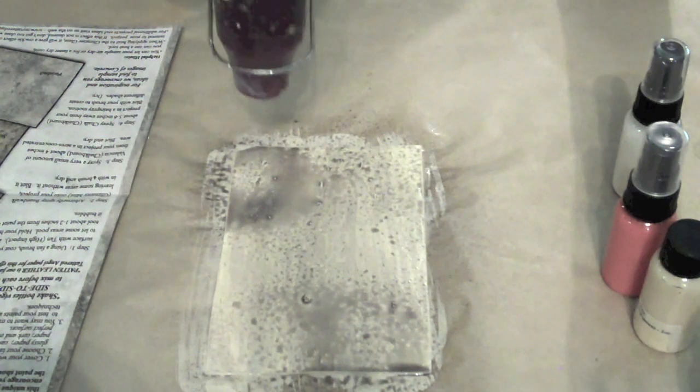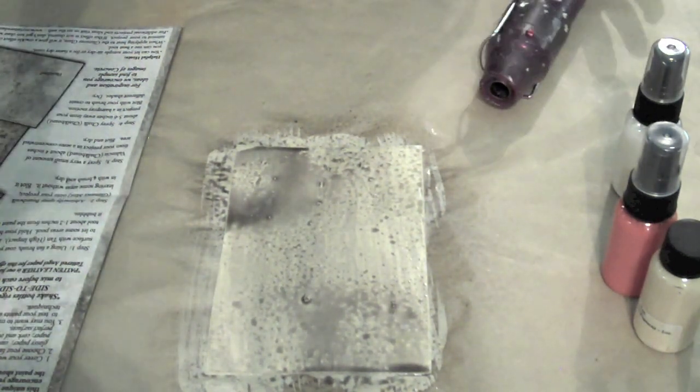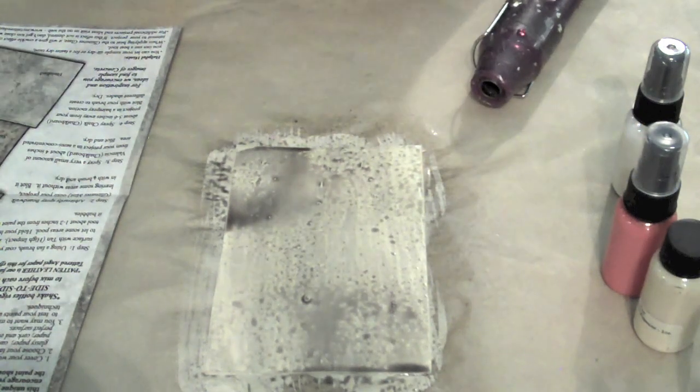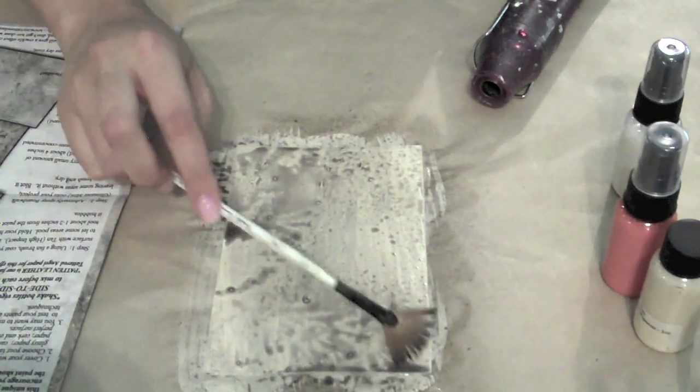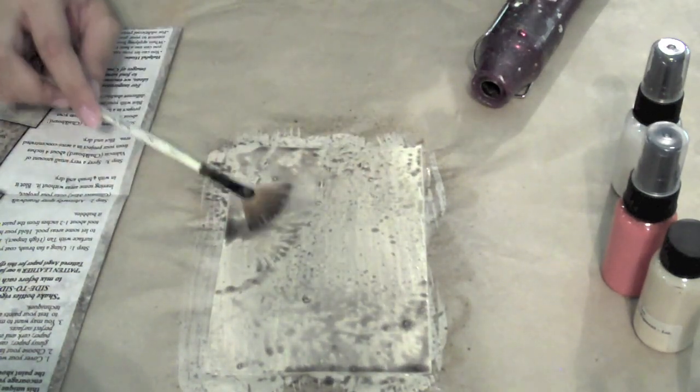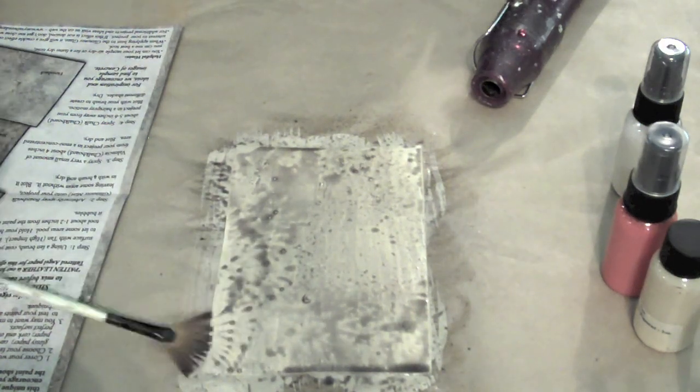Then you're going to go ahead and blot that with your fan brush a little bit just to kind of get like a funky blotted effect like this. You don't want it to be like a perfect mist everywhere. You want it to be kind of messed up in certain areas.